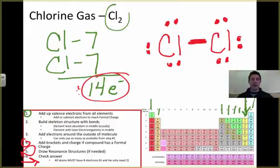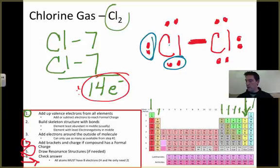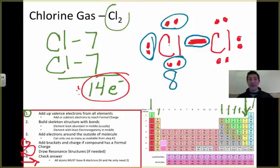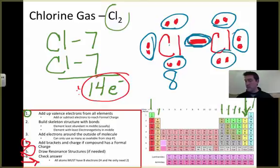Let's look at this chlorine first. This chlorine has two, four, six, and this bond counts as two for this chlorine, so it has eight. It's happy. This chlorine has two, four, six, and it gets to count these as well because they're sharing them, so it has eight.